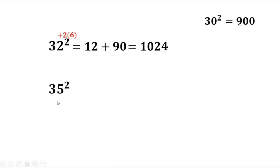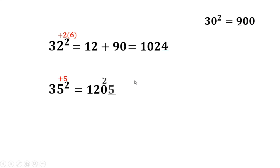Next example: 35 squared. 35 is 30 plus 5. So 5 times 6 is 30, plus 90 is 120. Then the square of 5 is 25, so we have 1225.